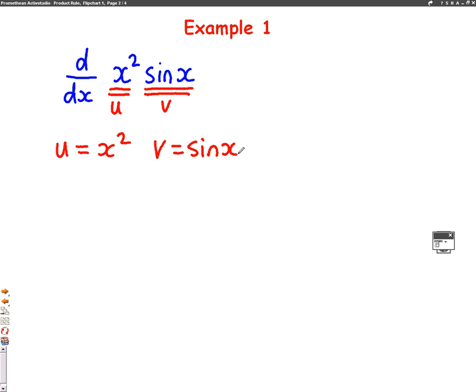What you need to do next is you need to differentiate both of these. When you differentiate u, you'll get u dash is 2x. And v dash, when you differentiate sin x, you get cos x.